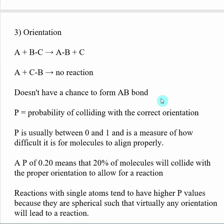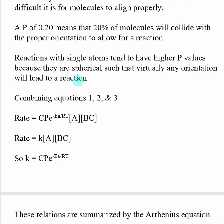There needs to be a piece in our collision theory to compensate for orientation. P represents the probability of our two molecules colliding with the correct orientation — it's a percentage between 0 and 1, measuring how difficult it is for these two molecules to collide properly. For example, a P of 0.2 means roughly 20% of molecules will collide with the proper orientation. P values are higher for single atoms (spherical, so no orientation issue) and lower for bimolecular reactions.